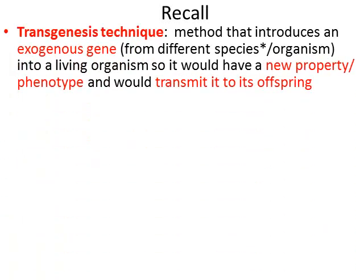Let's do some recall before we start solving the exercise, starting with the word transgenesis. What is transgenesis? It is the process where we introduce an exogene. This exogene could be from a different species or a different organism of the same species, and we allow the recipient to have a new phenotype. This phenotype is transmitted to its offspring because the gene would be transmitted to the offspring. So three main ideas: we have an exogene, this exogene provides a new phenotype, and this phenotype is transmitted to the offspring.